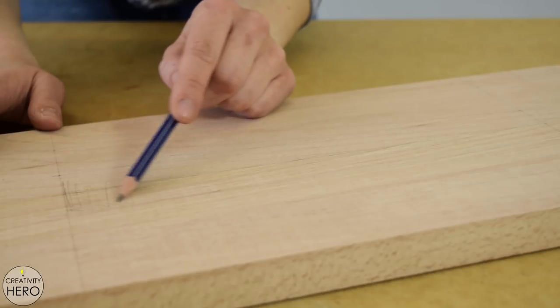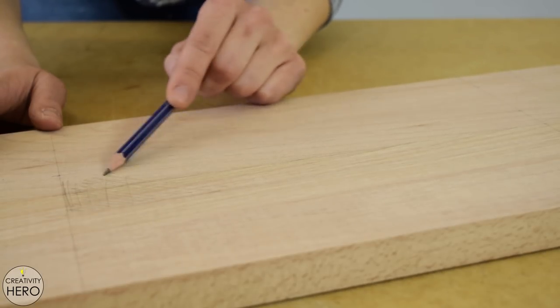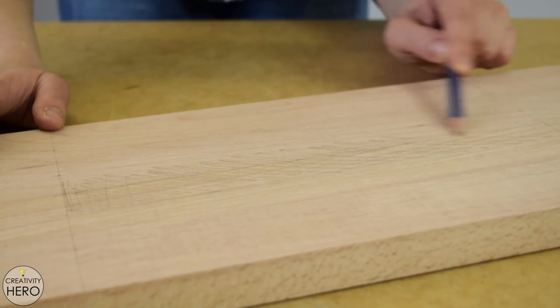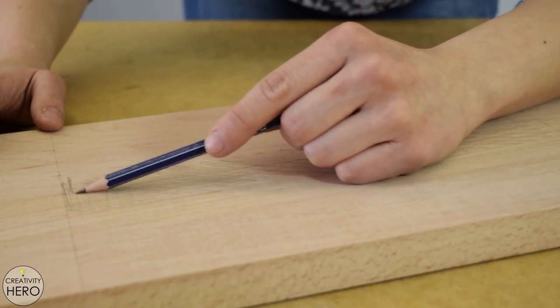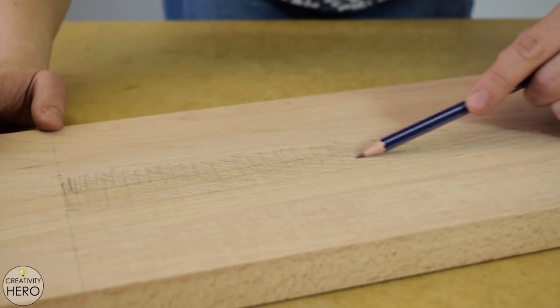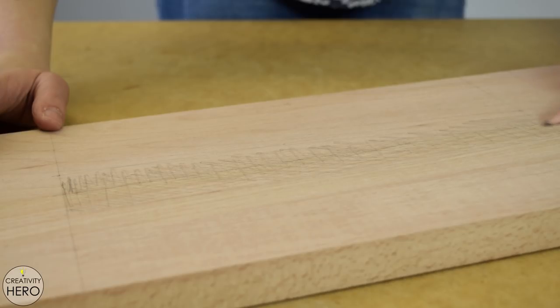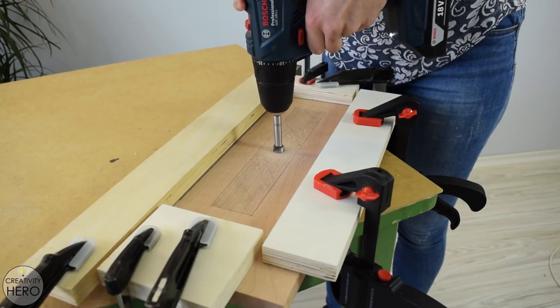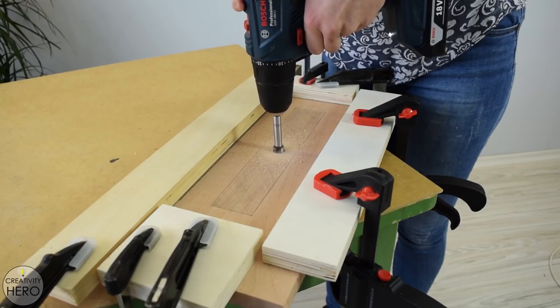Anyhow in the middle of the base I need to remove one centimeter of the thickness of the wood and there I'll actually place the concrete form. For that purpose I'll use a router but I don't have a plunge router base so I came up with a simple solution that worked great. I drew all the lines and clamped some scrap pieces of wood onto the board which will serve as guides for the router.